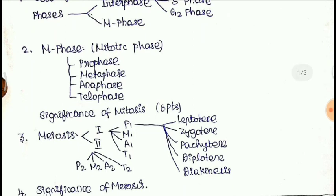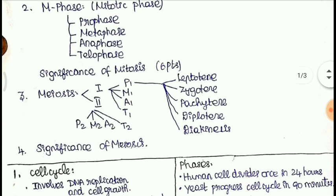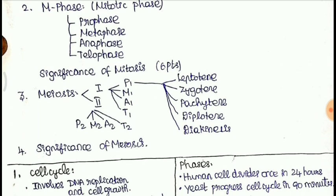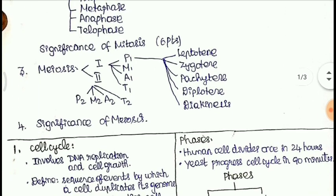Next is M phase. M phase is called the mitotic phase. We have four sub-phases in it: first is prophase, second metaphase, anaphase, and telophase. We will also learn the significance of mitosis.